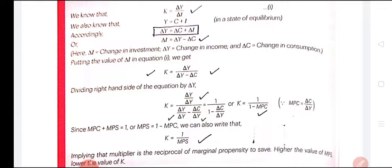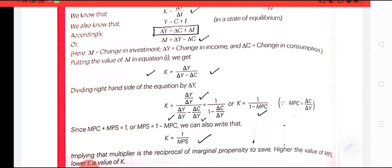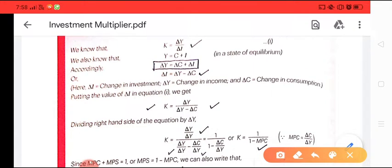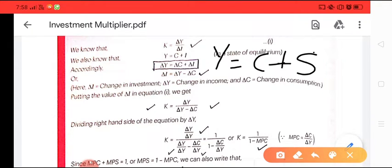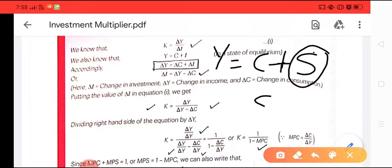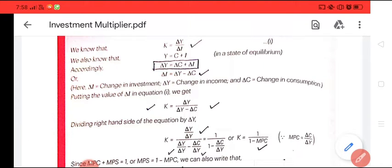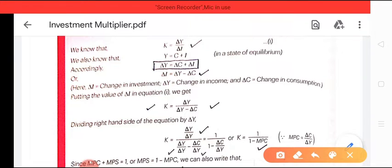Entire income Y is either consumed or saved, so Y equals C plus S. As per the equilibrium condition, saving equals investment, so Y equals C plus S or Y equals C plus I — it is one and the same thing. Therefore we can write Y equals C plus I, because in the equilibrium state I is equal to saving.